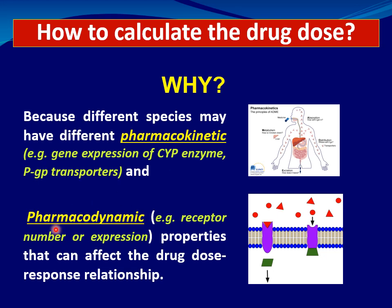There can also be pharmacodynamic differences between humans and rats. For example, receptor number or expression — such as beta receptors or alpha receptors — may differ between rat and human. Therefore the doses used for drugs are not simply a matter of converting from human to rat; you may need higher or lower doses according to receptor expression and number, and many other factors that can affect the drug-dose relationship.